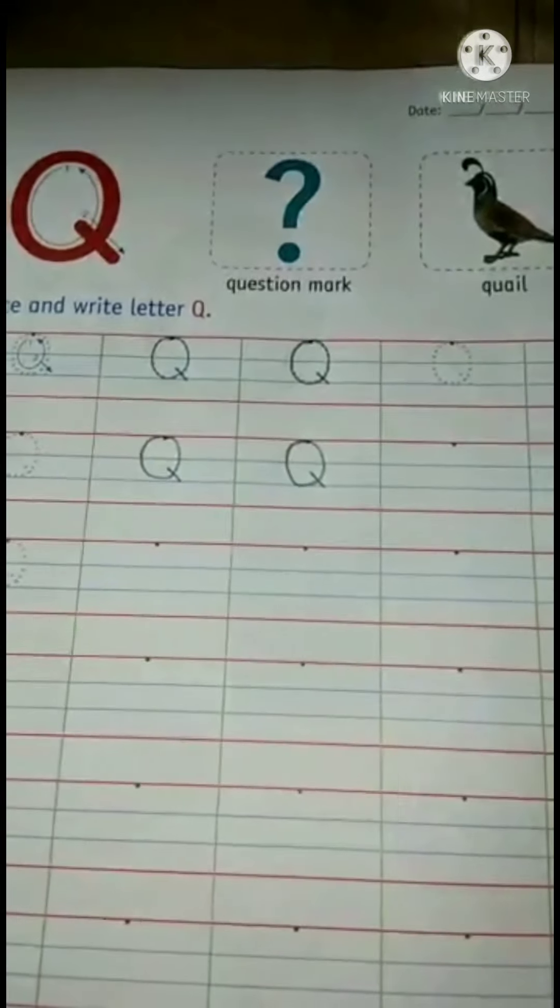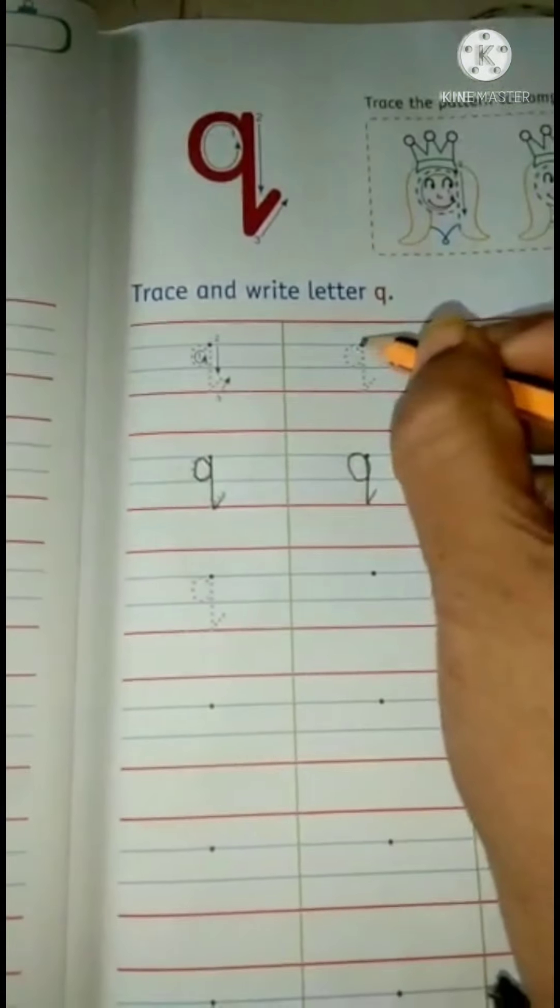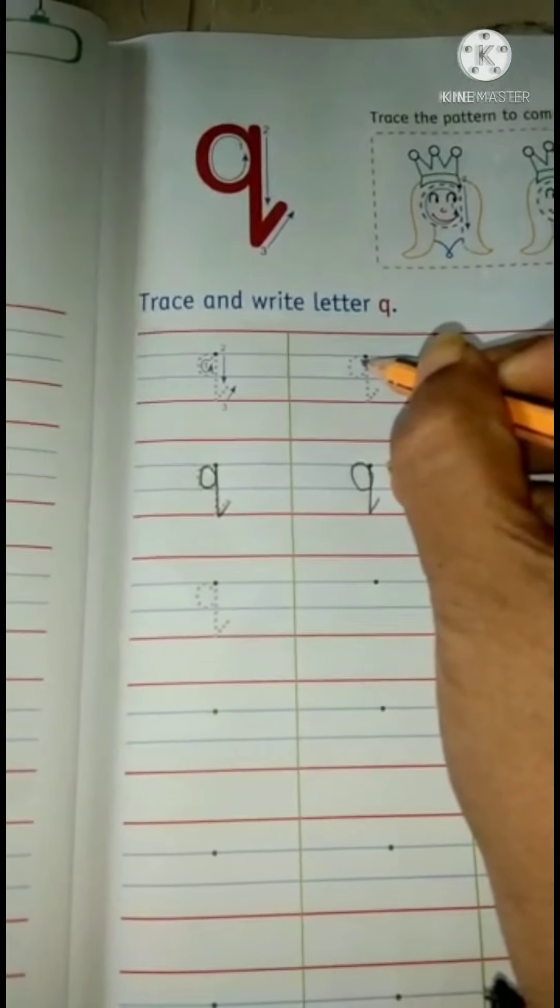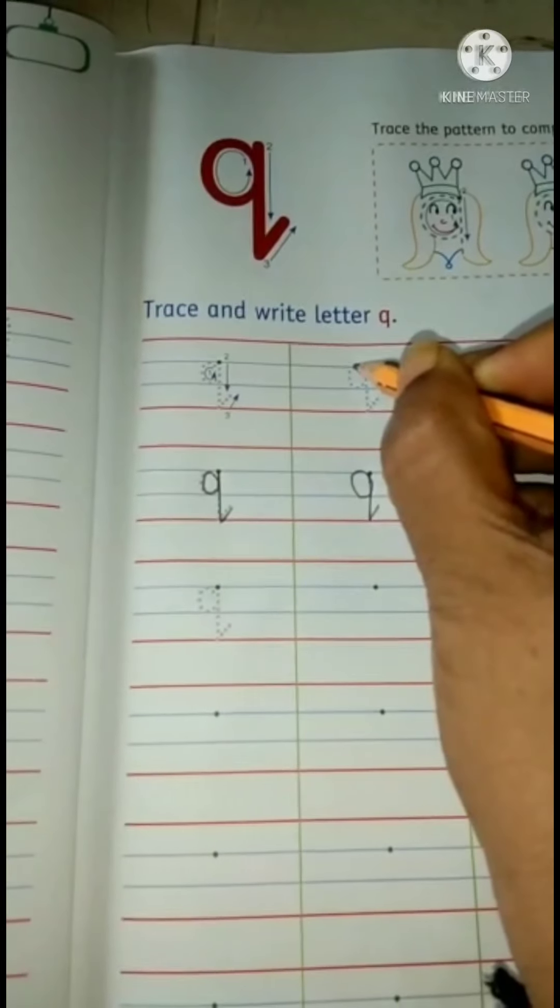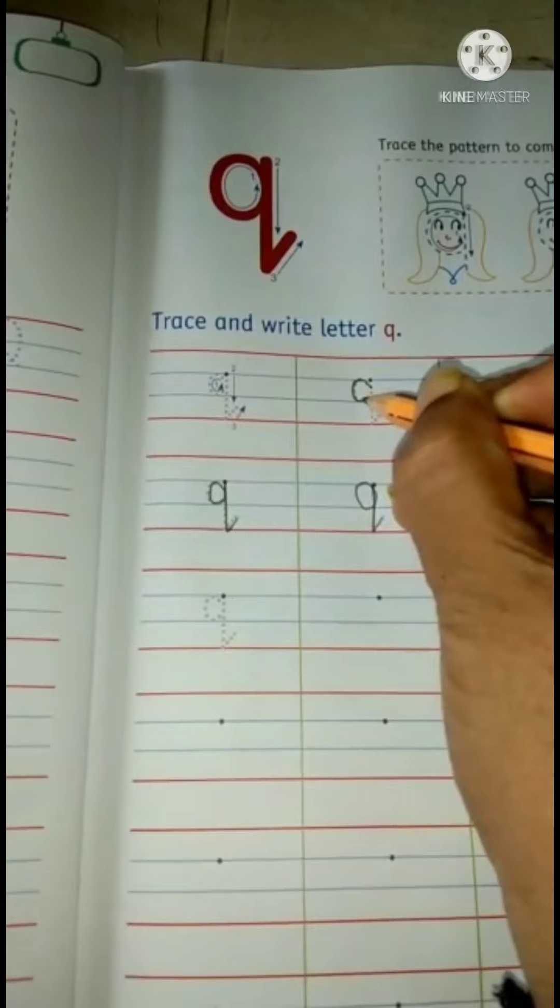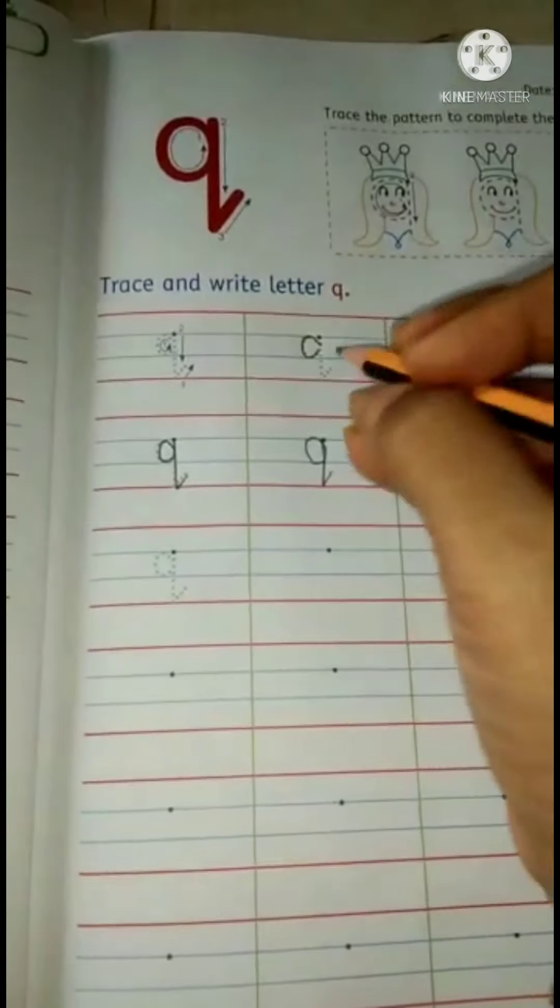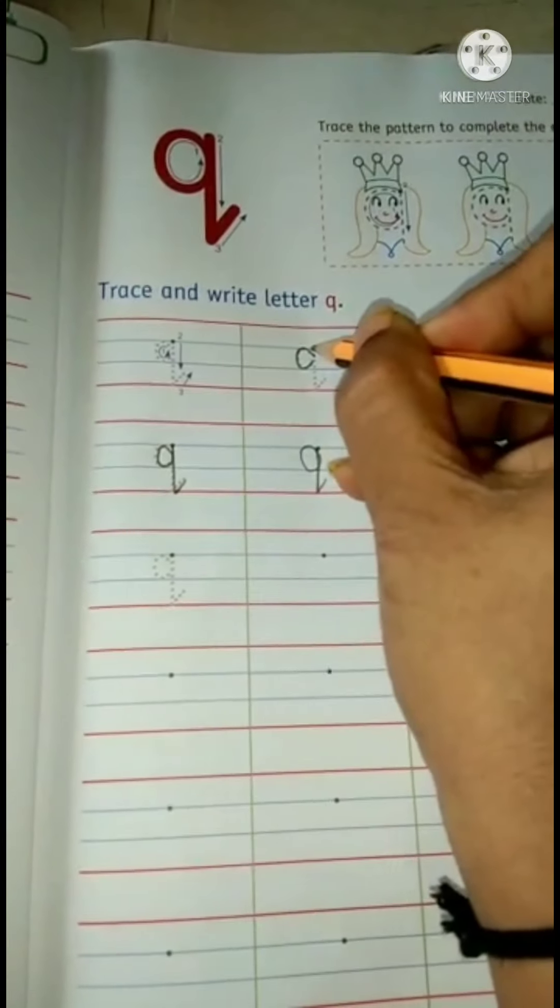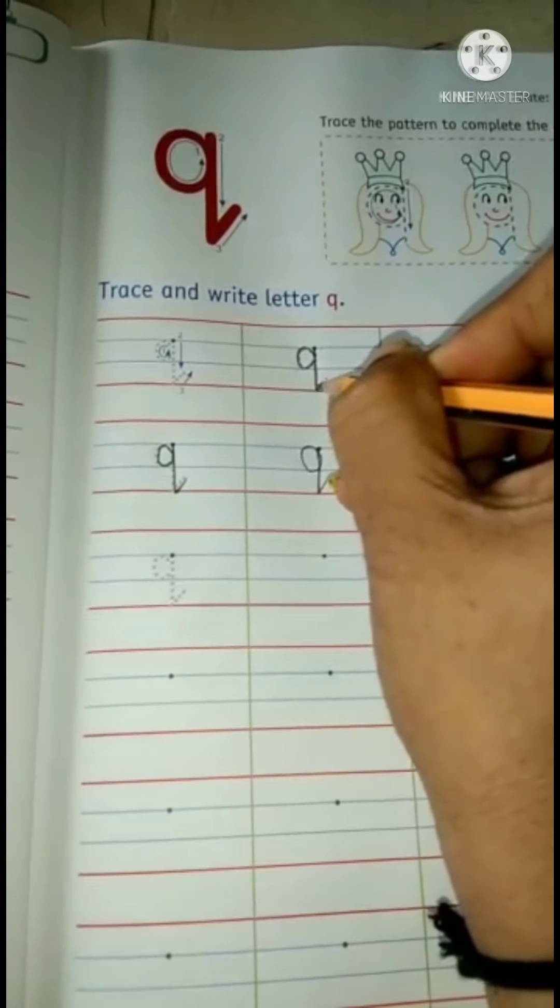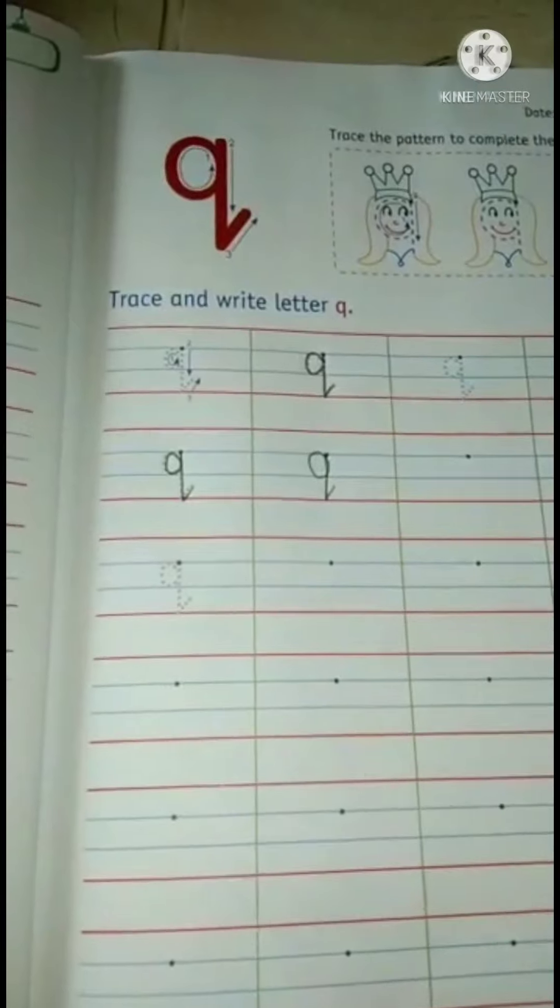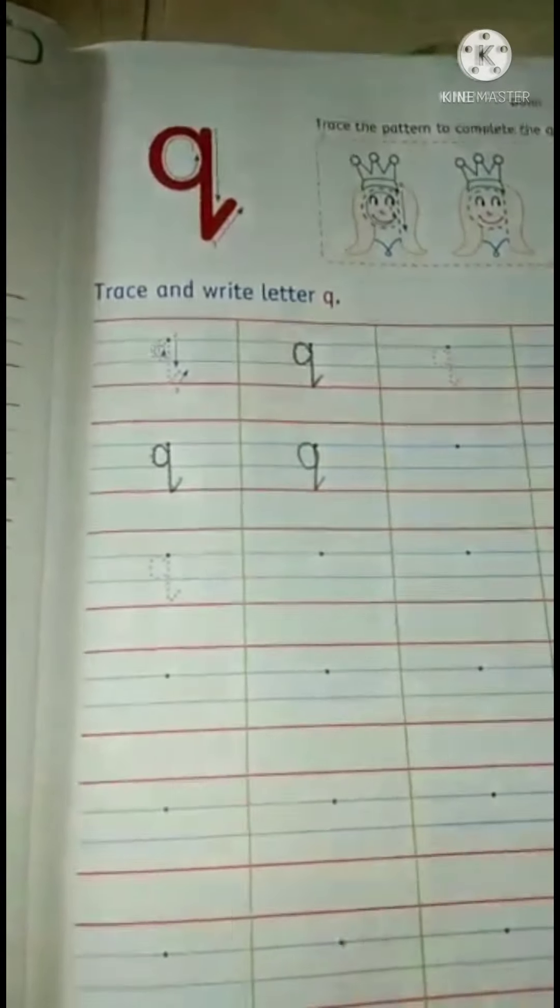In this way, capital letter Q. Now we will learn to trace small letter q. So we will trace it in this way. Start from here. Draw one standing line from the top and with the slanting line done. It's small letter q.